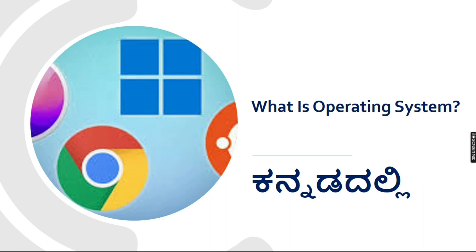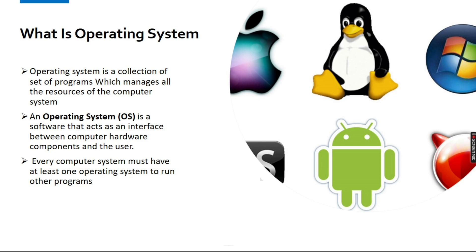We are also going to cover the topic of what is an operating system. We are going to look at hardware and software. Hardware is something we can touch and sense, while software we cannot touch but we can use. Hardware and software together are like a soul. Software is a collection of programs used to manage all of the resources that we have.